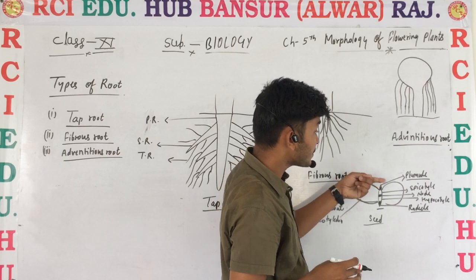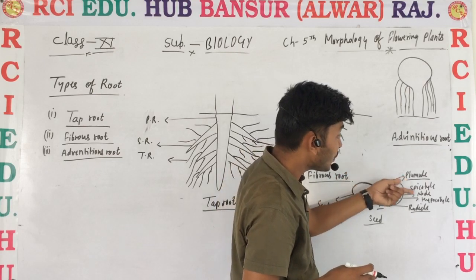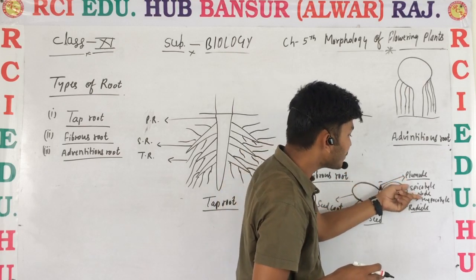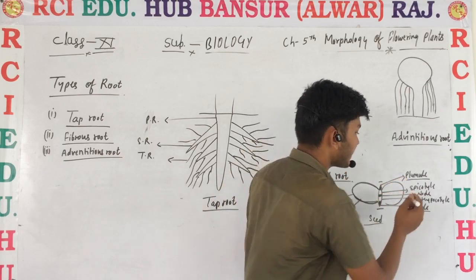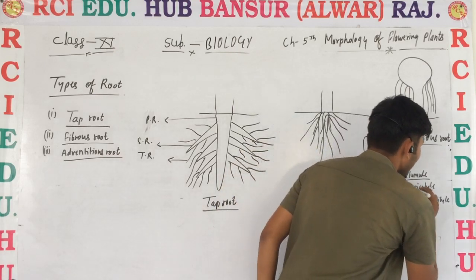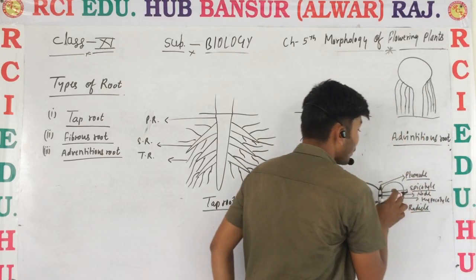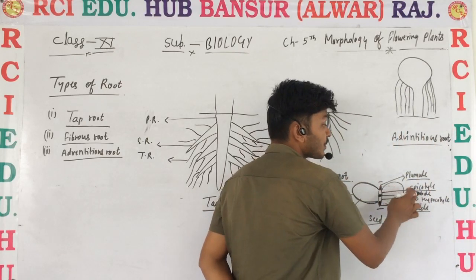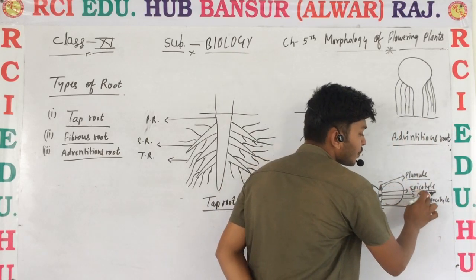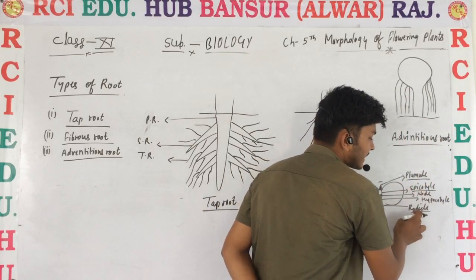The portion between the plumule and cotyledonary node is known as epicotyl. The portion between the cotyledonary node and radical is known as hypocotyl.